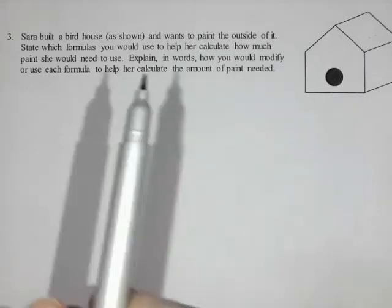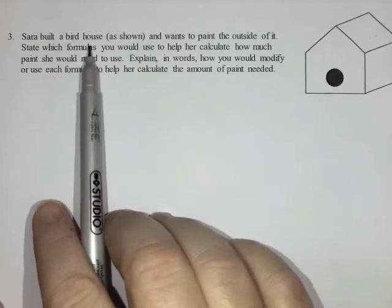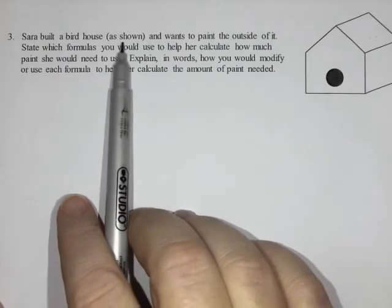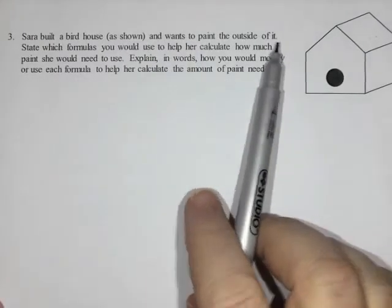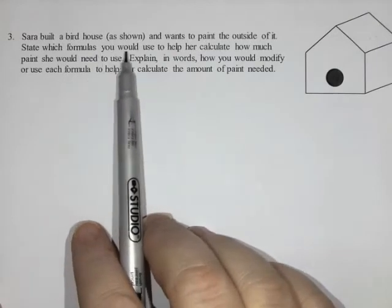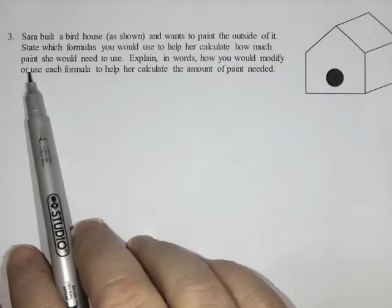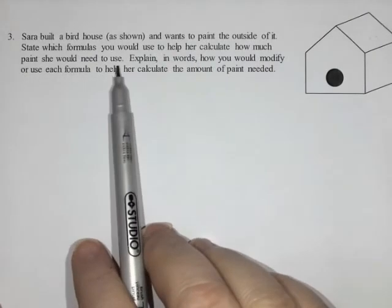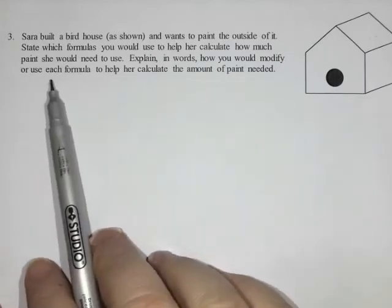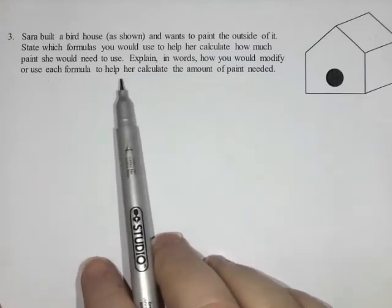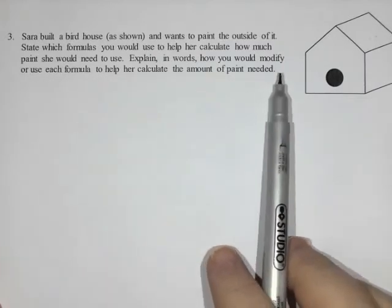The question says Sarah built a birdhouse as shown and wants to paint the outside of it. State which formulas you would use to help her calculate how much paint she would need to use, and explain in words how you would modify or use each formula to help her calculate the amount of paint needed.